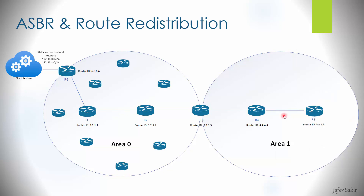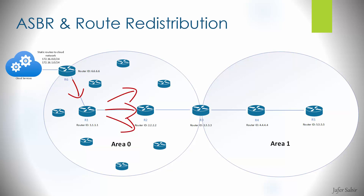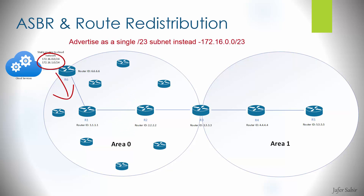There is another type of OSPF router: the Autonomous System Boundary Router, or ASBR. It sits at the boundary between the OSPF autonomous system and external systems, handling external routes from other routing protocols such as EIGRP, BGP, or static routes that you want to import — redistribute — into OSPF. In the diagram, R6 is connected to a cloud environment using static routes; redistributing these into OSPF generates Type 5 LSAs for each route, propagating them through the area so every router learns about them. Like the ABR, the ASBR can also summarize these external networks — for instance, advertising two /24 subnets as a single /23 instead.